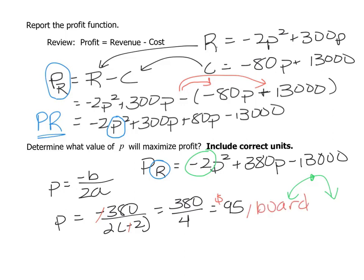Now one thing to notice is just a couple of parts ago we found where the revenue was maximized and that's different from where the profit is maximized because you have two different quadratic functions. That's it for this video. Thanks for watching.